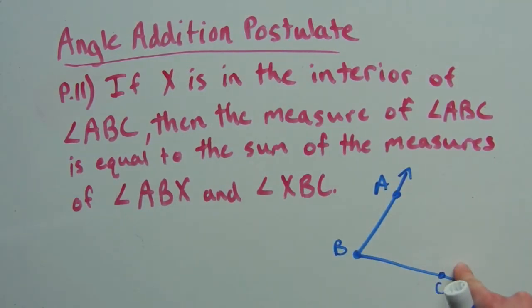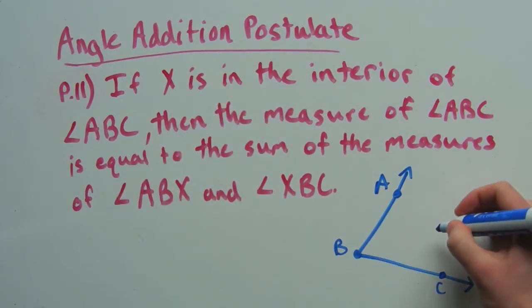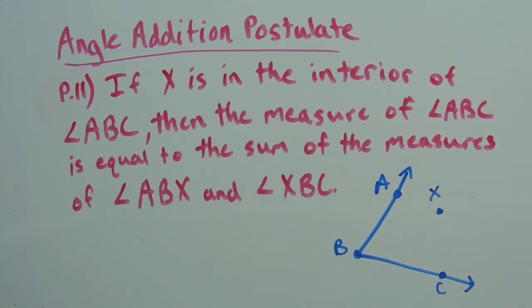Here we have our angle ABC, and x is in the interior of that angle. So let's place x right here. Now we're going to draw a ray from B to x.